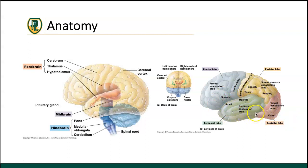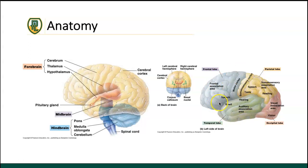The temporal lobe is the most lateral of the four lobes. It contains the hippocampus, responsible for memory and learning new things. The temporal lobe plays a major role in language comprehension, emotion association, and auditory association. Hearing can be a big thing compromised with temporal lobe injury, which makes sense given the temporal lobe's proximity to the ear canal.